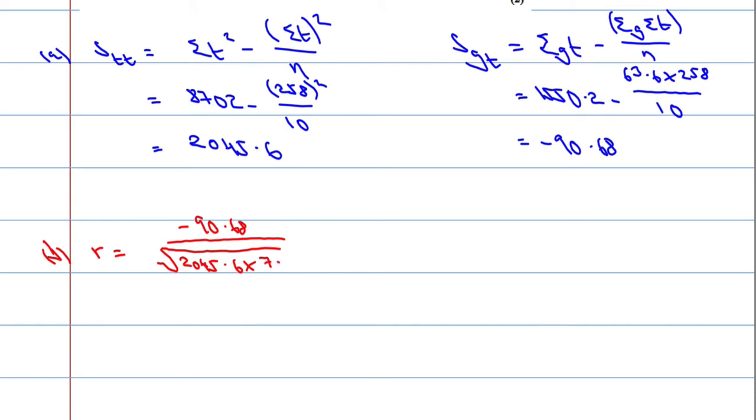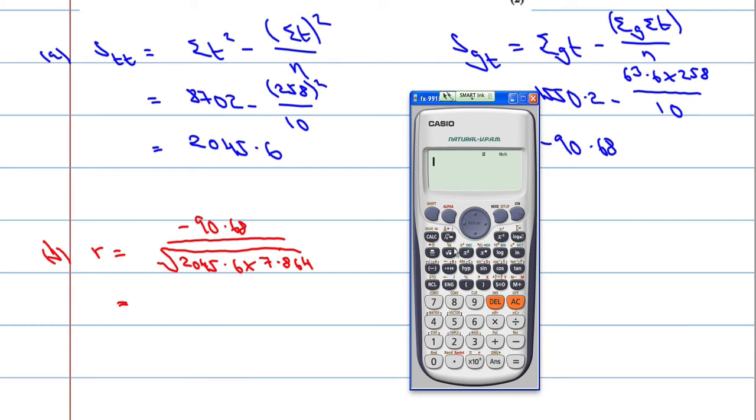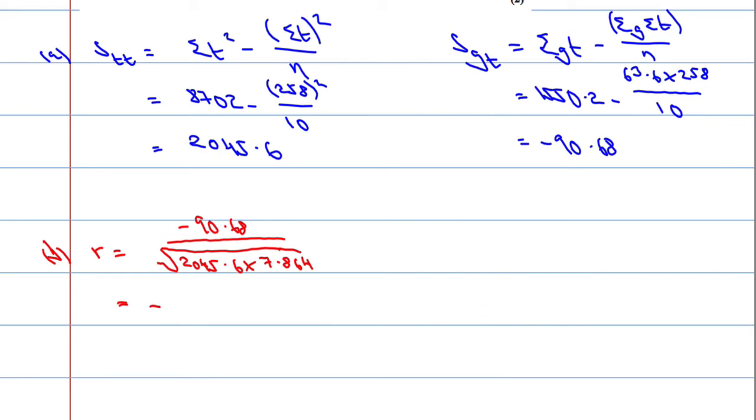So we get, it's a fraction, we have negative 90.68 over square root of 2045.6 times 7.864. That's going to give us negative 0.714956 and so on. Let's give it the three significant figures here because I don't want to be writing this out. Negative 0.715.